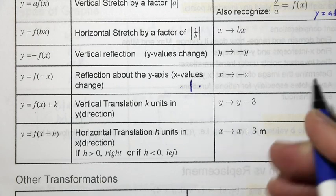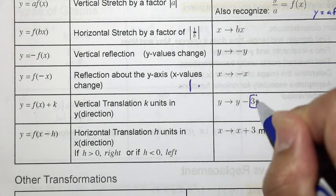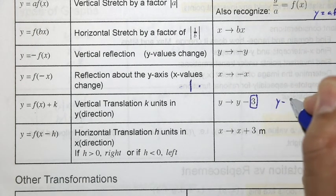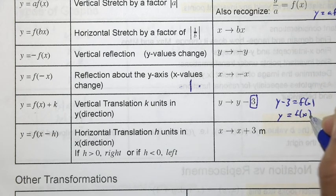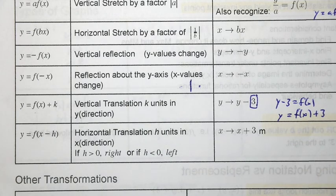y being replaced with y minus 3 is actually, this is the k value of positive 3. But you can also see it this way. If you had y minus 3 is equal to f of x, if you rearrange it, you can see that it is the old f of x plus 3, three units up.